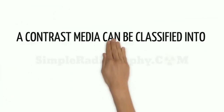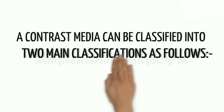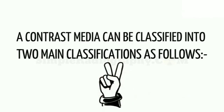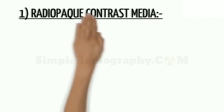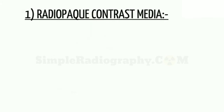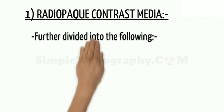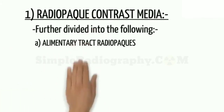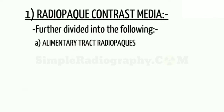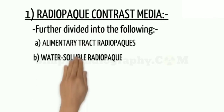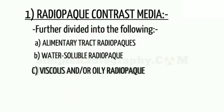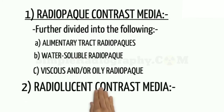A contrast media can be classified into two main classifications. Number 1: Radio-Opaque Contrast Media. This is further divided into Alimentary Tract Radio-Opakes, Water-Soluble Radio-Opakes, and Viscous or Oily Radio-Opakes.